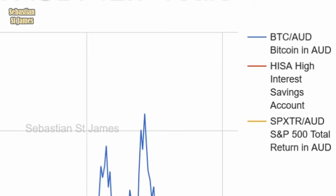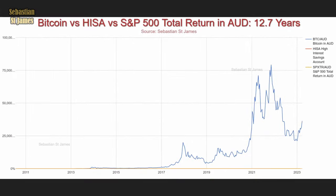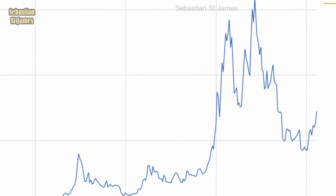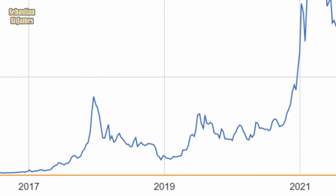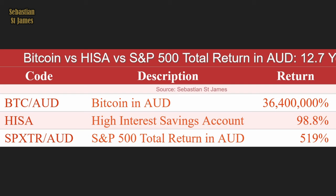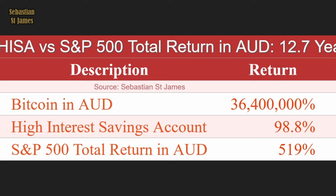Bitcoin. You've done entire videos denouncing Bitcoin — why is it in your video now? Is it true that if I invest in Bitcoin my wife will leave me? Yes, that would definitely happen. But I have the actual data on Bitcoin and I am 100% objective. This is Bitcoin in Australian dollars — and there's one thing that stands out: a great big blue wiggly thing, and you can barely see any of the rest. Bitcoin in Australian dollars has returned 36,400,000% over 12.7 years. Cash returned 98.8%, the S&P 500 519% — but it's not 36 million 400, is it?